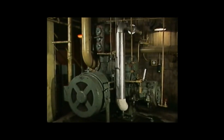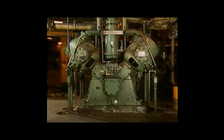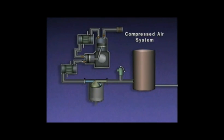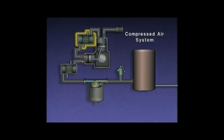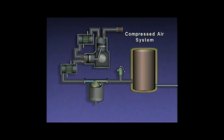Compressors are used in many different types of compressed gas systems, and a particular facility may have several. This simplified illustration identifies the basic components of a typical compressed air system, which may also be referred to as a pneumatic system. The system includes a reciprocating compressor with two cylinders and two pistons, an intercooler, an aftercooler, a demister, a safety valve, and a receiver.